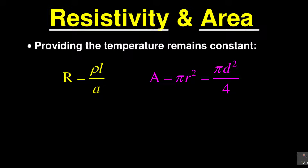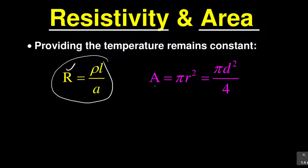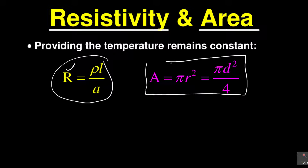One formula for finding the resistivity and one for finding the area. Resistance R equals rho (resistivity) times length L in meters, divided by area A in meters squared. This formula is very important for your calculations. The area of a conductor is found by pi R squared or pi D squared over four. If you haven't covered this, please check the previous lesson.